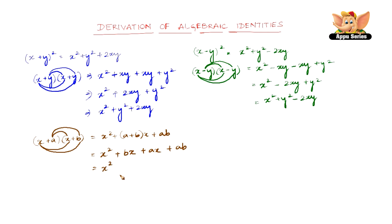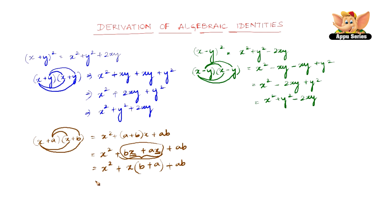The first term is x square. If you look at the two middle terms, bx and ax, both have the factor x in common, so we take x out. That leaves b and a, so we get x into b plus a. Therefore the expression becomes x square plus a plus b into x plus ab, which is the same result.